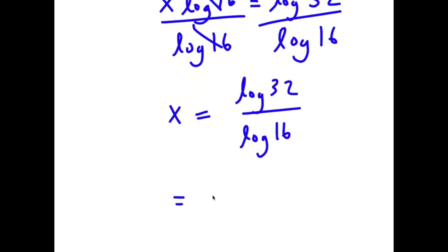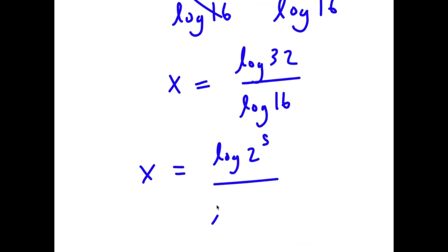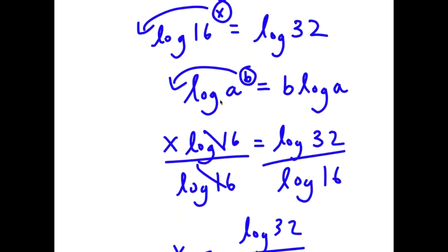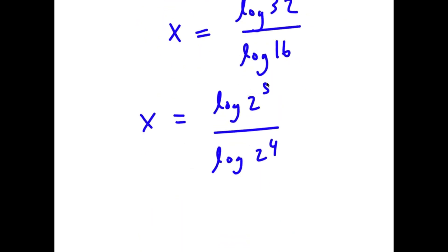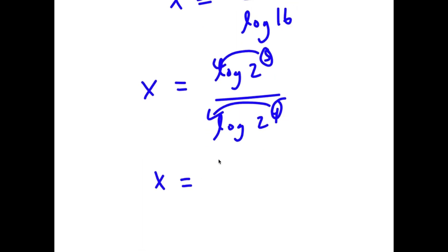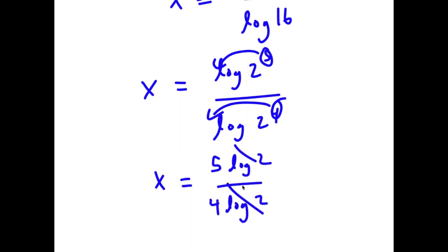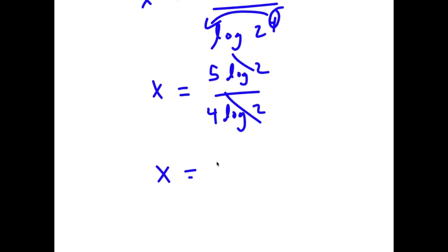Log 32 is the same thing as log 2 to the power of 5, and log 16 is the same thing as log 2 to the power of 4. Since I can move the exponent to the front, I now have 5 times log 2 over 4 times log 2. These two log 2s cancel out, so I'm left with x equals 5 over 4.